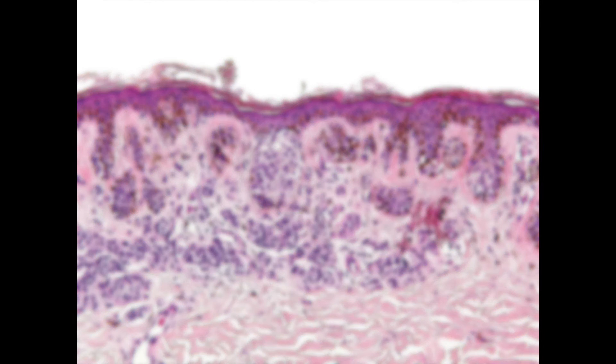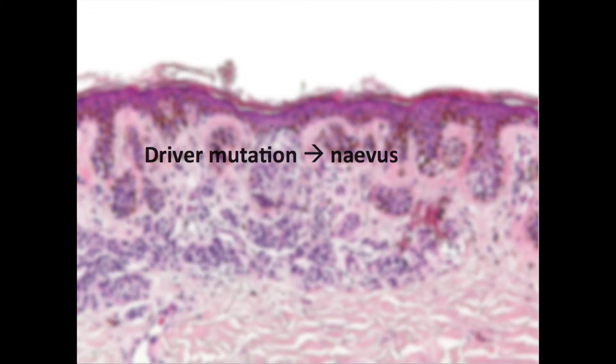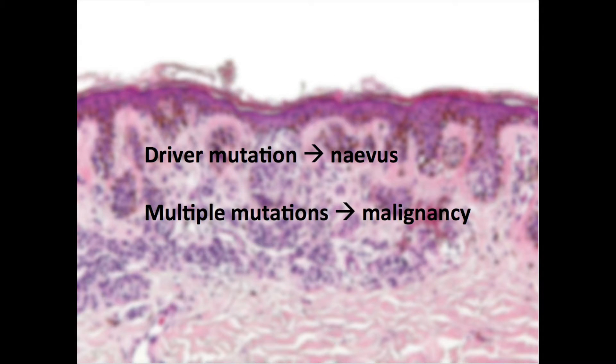Most of the time, in the case of a driver mutation, the melanocytes will develop into a nevus, then stop growing. Only when there are multiple mutations, these nevi may develop into a malignant melanoma.